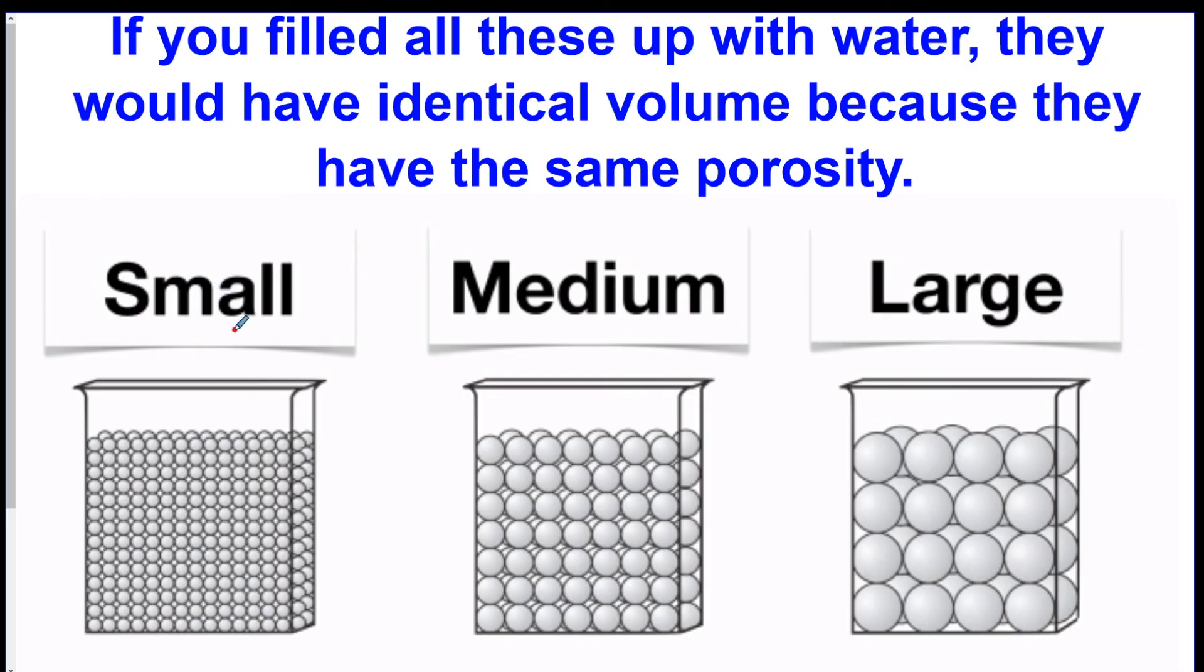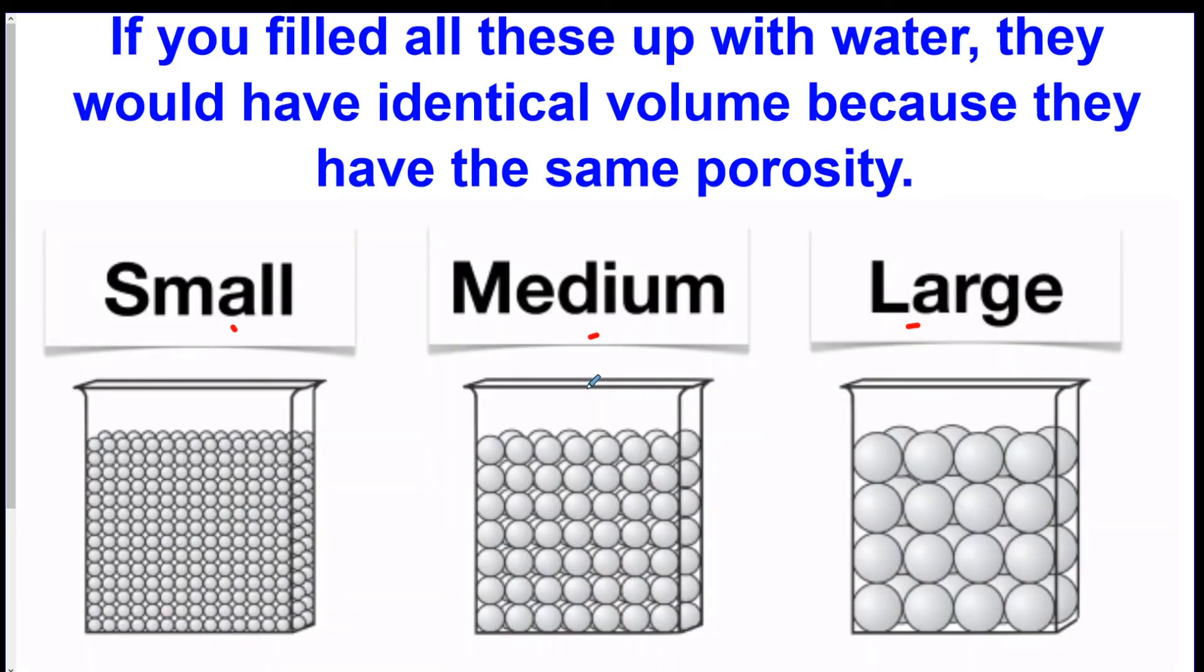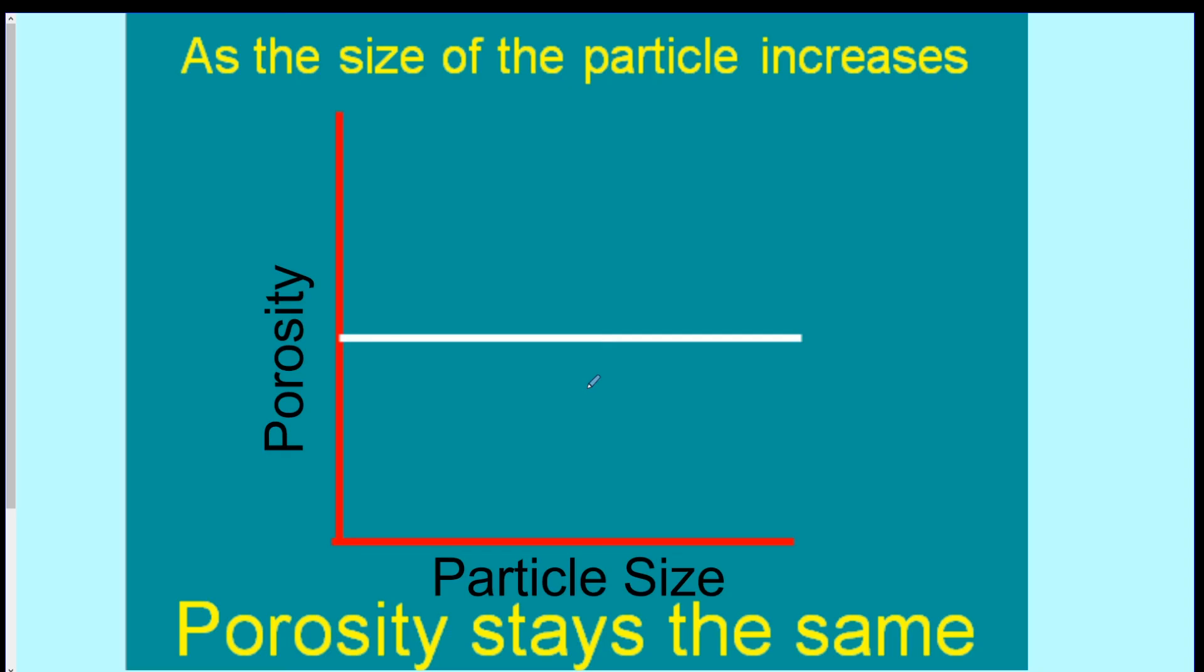So this is a good example. Small, medium, large. If you filled all of these up with water completely, they would have identical amount of water that could fit in the cups. They each have the same porosity. So yeah, you need to make sure the particles are the same. You can't have different shaped particles in these ones. Your example wouldn't work. They have to all be the same shape. So as the particle size increases, the porosity stays the same. This is a constant relationship. This is the only outlier right here. This is the weird one to remember. And that's where we're going to end off today for porosity. I will see you on the next one. Bye.